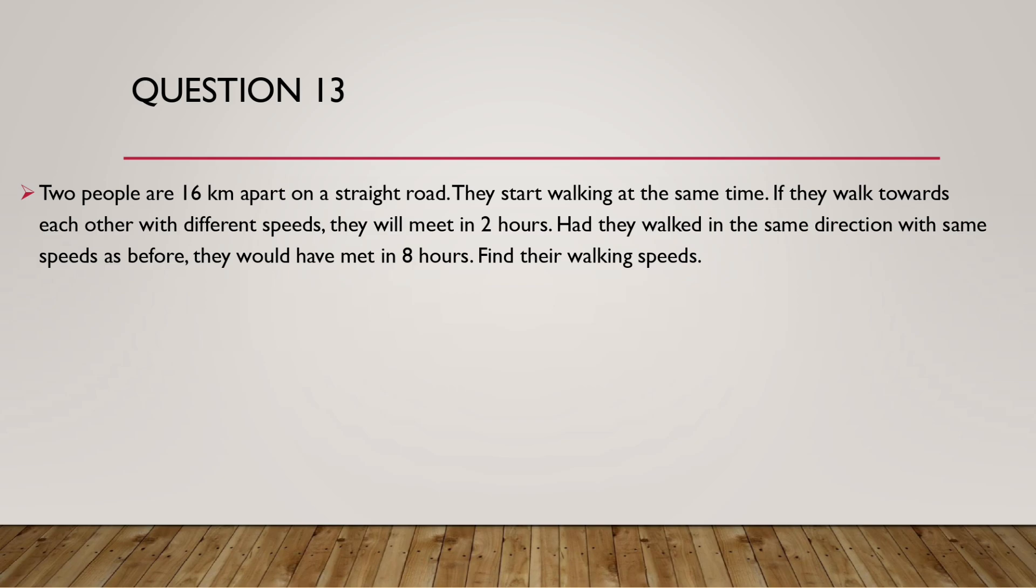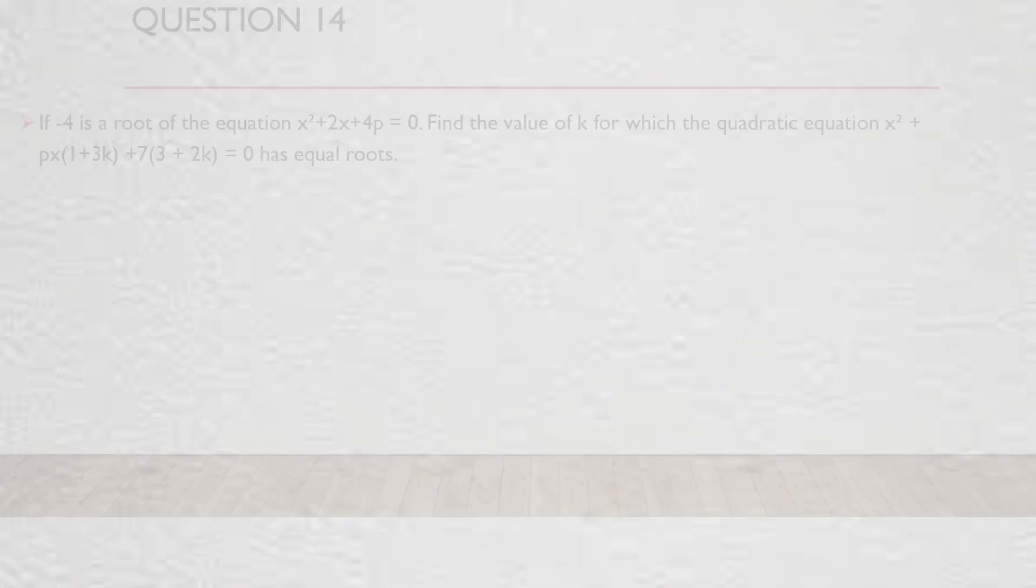Question 13. Two people are 16 km apart on a straight road. They start walking at the same time. If they walk toward each other with different speeds, they will meet in 2 hours. Had they walked in the same direction with the same speeds as before, they would have met in 8 hours. Find their walking speeds.